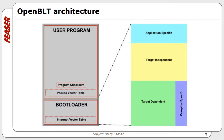Looking at the memory map, you'll see that there are essentially two independent programs present in flash memory: the bootloader and your own firmware. The bootloader is located at the start of flash memory, where normally the interrupt vector table is located. This means that the bootloader always runs first after every reset. The bootloader evaluates a checksum value inside your firmware to determine if your firmware is present and can be started.